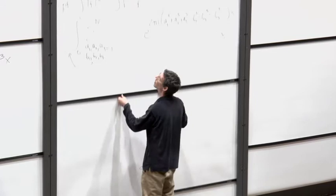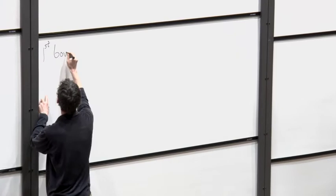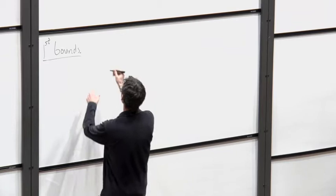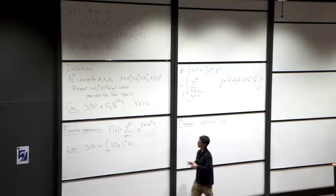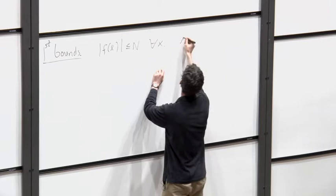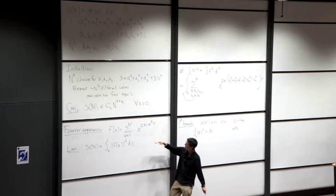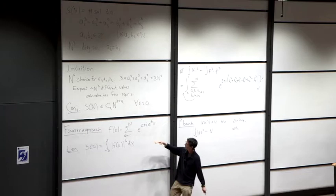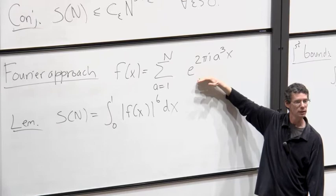Here are some first bounds. One basic bound is that |f(x)| ≤ n for every x — that follows from the triangle inequality, since f is a sum of n terms of size 1. The second fundamental fact is orthogonality, which lets us compute exactly that the integral of |f|² equals n, since each term has norm-squared integral 1 and they're orthogonal to each other.